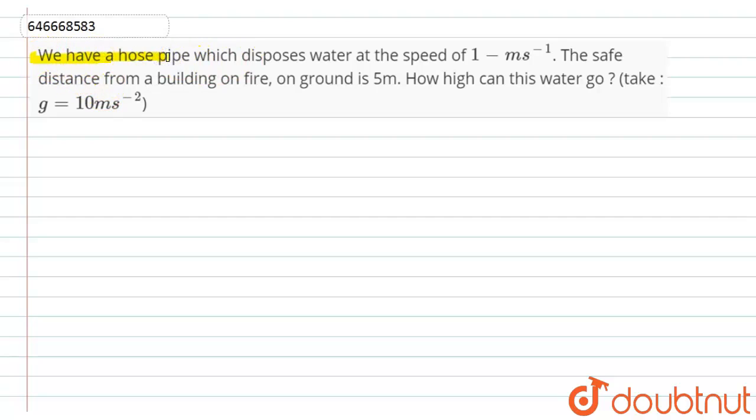We have a hose pipe which disposes water at a speed of 1 meter per second. The safe distance from a building on fire on ground is 5 meters. How high can this water go? Take the value of g equals 10 meters per second squared. Let's see the solution.